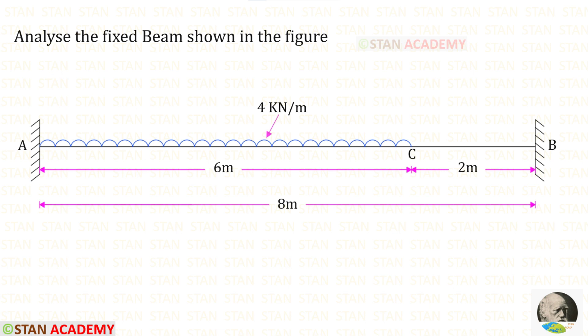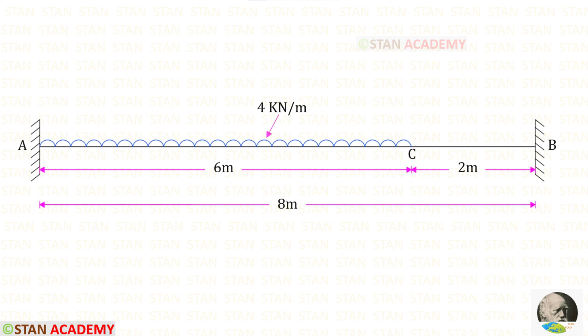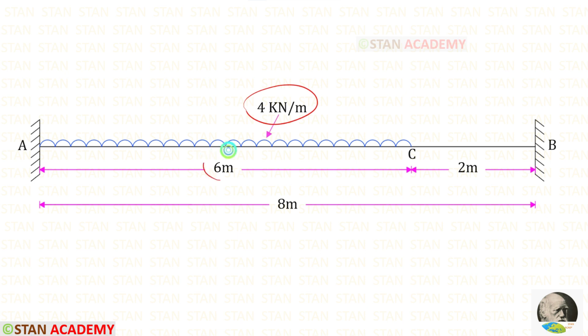Hello everyone. Today we are going to analyze this fixed beam. The length of the beam is given as 8 meters. In this beam we have a uniformly distributed load of 4 kilo Newton per meter acting for a distance of 6 meters from the left support.